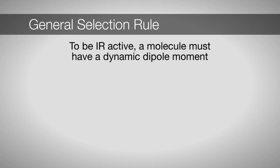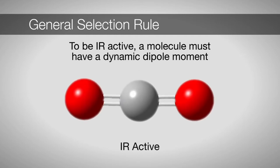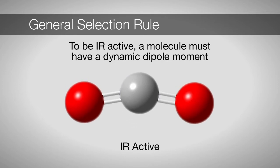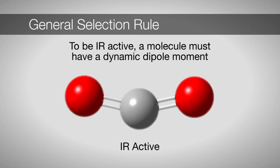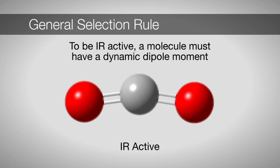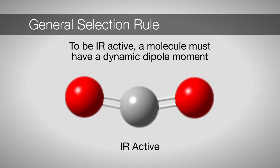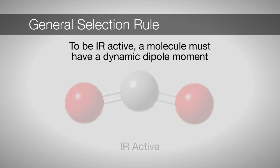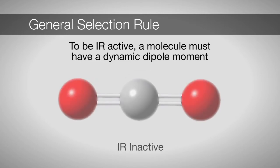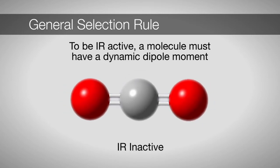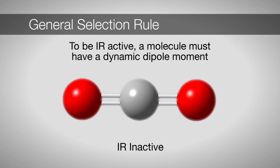This means that the dipole of the molecule must change through the process of the vibration. Let's see an example. Here we see the bending mode of carbon dioxide. During this vibration, we see a dipole is created as the molecule distorts from linear. We should expect to see this mode in an IR spectrum of carbon dioxide. If we look at the symmetric stretch of carbon dioxide, we do not see an induced dipole at any point during the vibration. We would not expect to see this mode using IR spectroscopy.